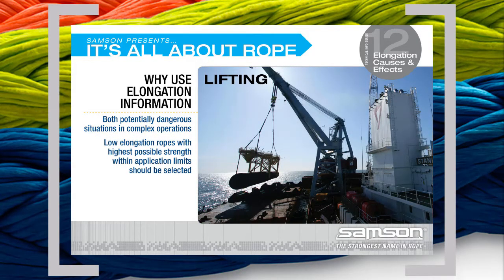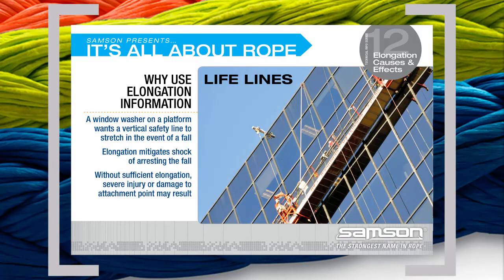In these cases, low-elongation ropes should be selected with the highest possible strength within the limits of the application. On the other hand, a window washer on a platform high above street level wants his vertical safety line to stretch in the event of a fall. Here, elongation acts to mitigate the shock of arresting the fall. Without sufficient elongation, that shock could result in severe injury to the worker or damage to the attachment point — neither is a desirable outcome.